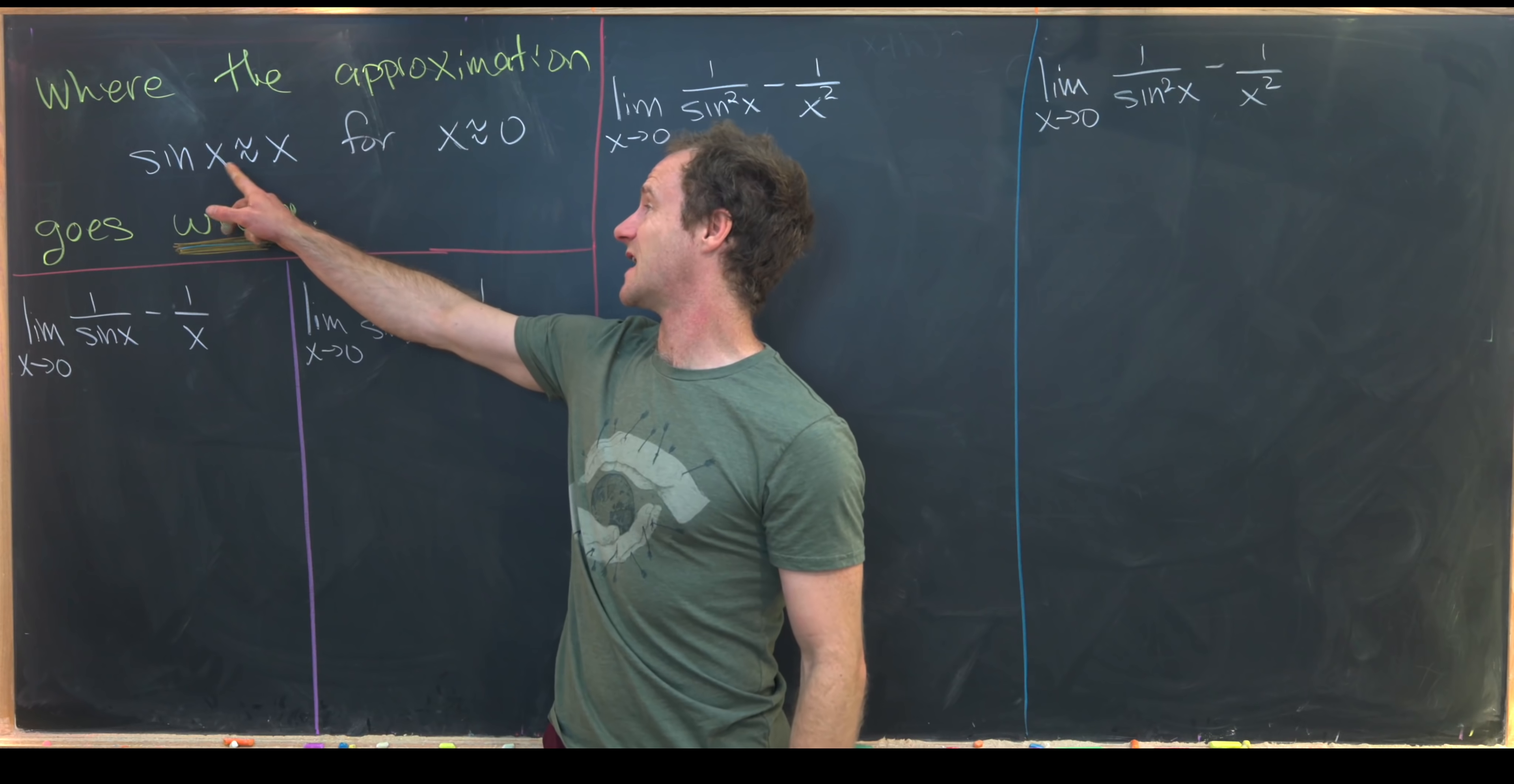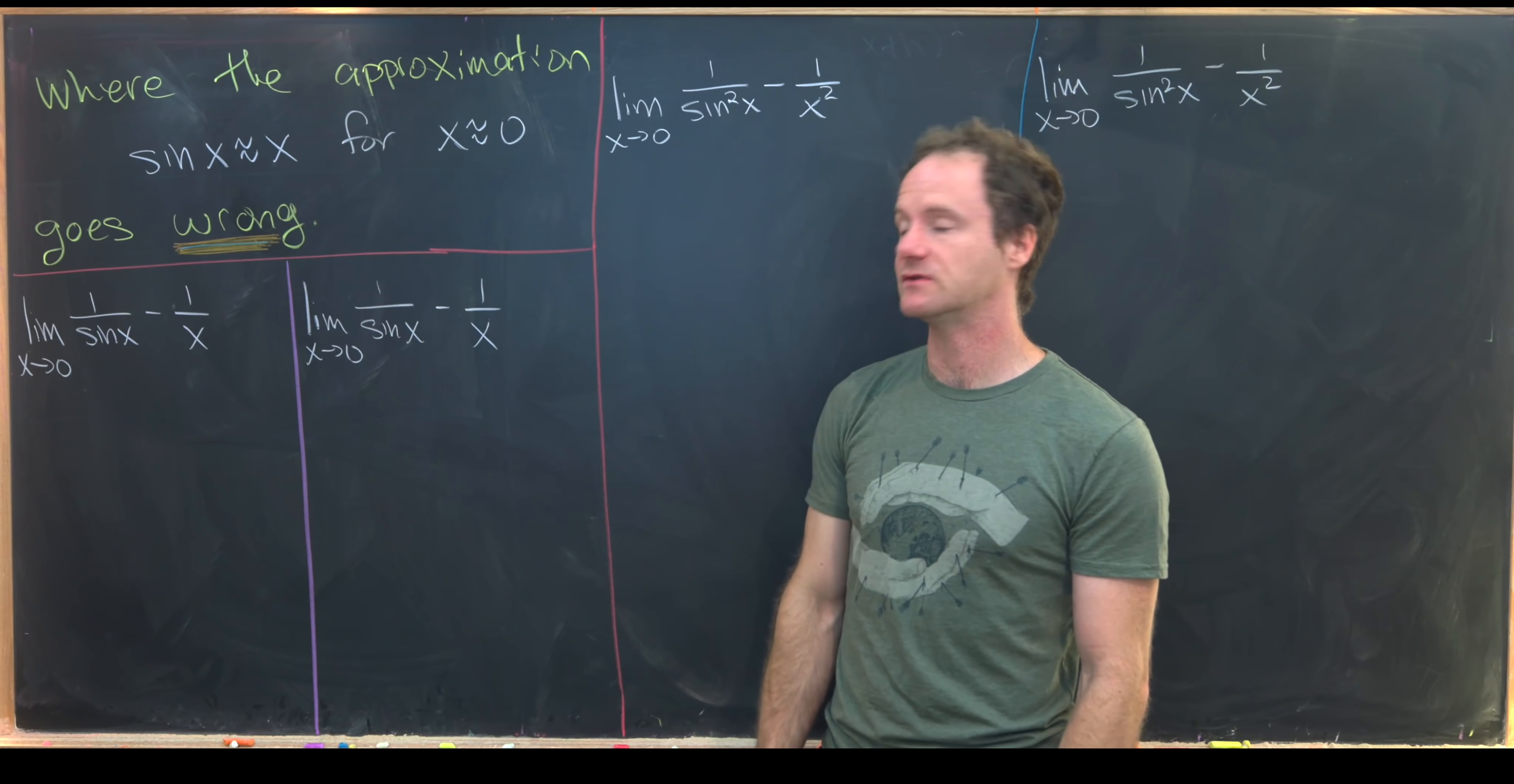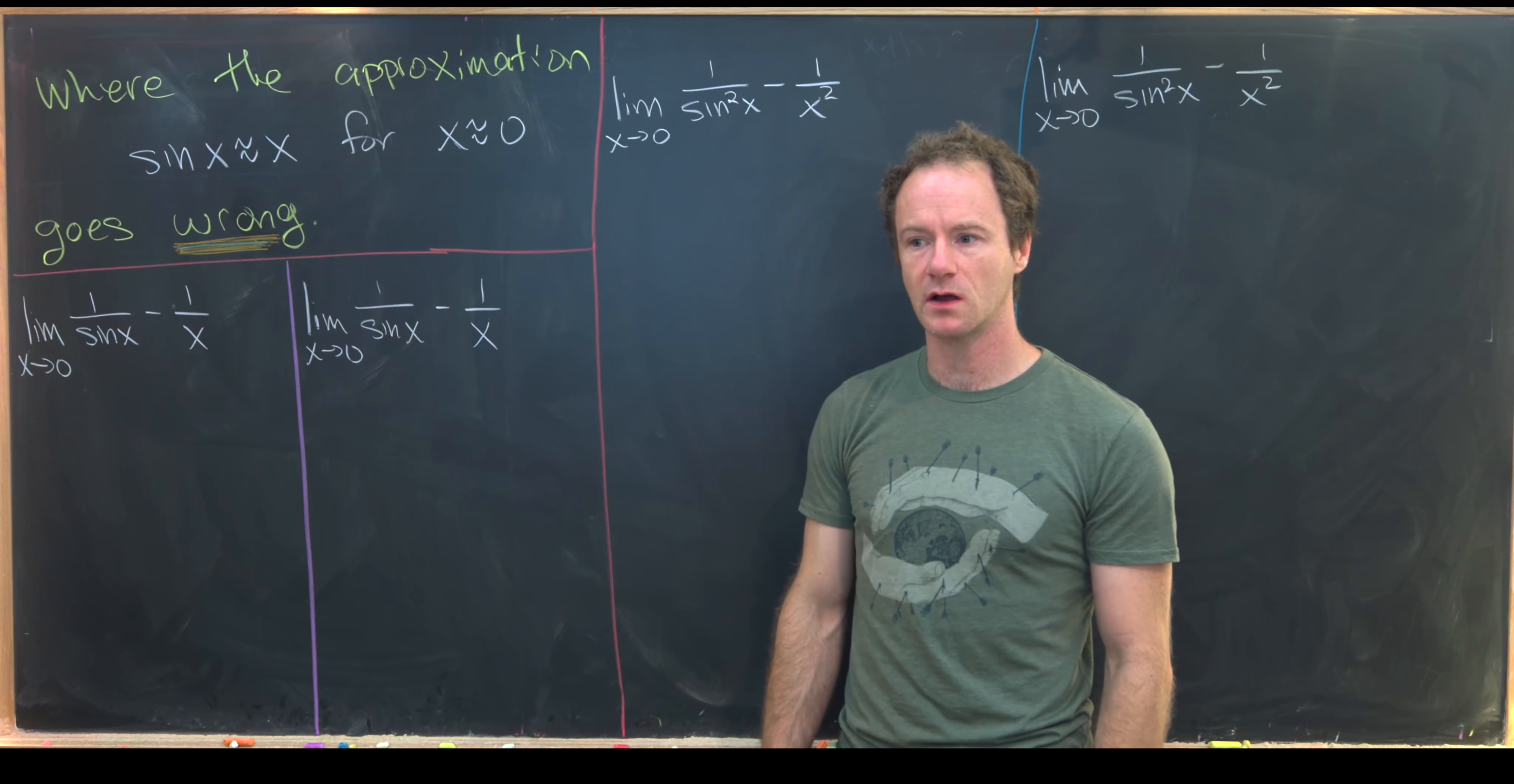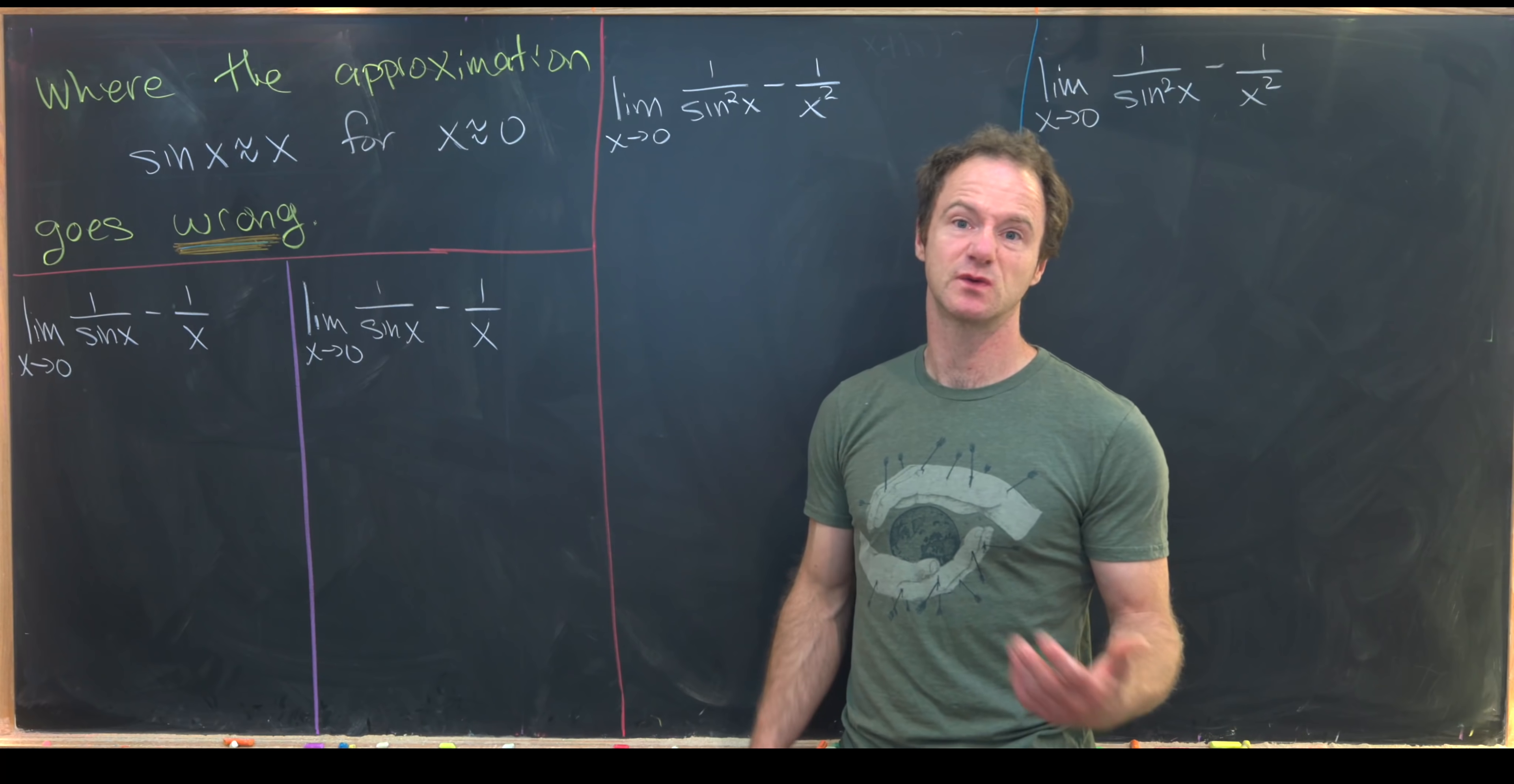And that approximation is sine of x is approximately equal to x when x is approximately equal to zero. And here I want to investigate where that type of approximation can go wrong, and then maybe open up the question of why it goes wrong. I found this in a math stack exchange post, which I will link in the description.